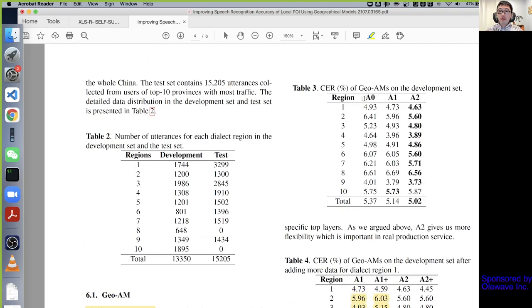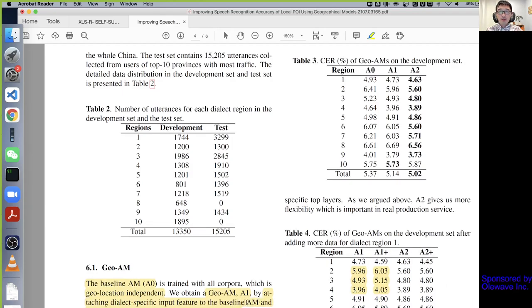Let's see Table 3 first. A0 is their baseline, so they just have one acoustic model. They just mix the speech with accent together and use that to train. A1 means they add an auxiliary feature which is the dialect-specific input into the network, but on the output side they're still using just one softmax.